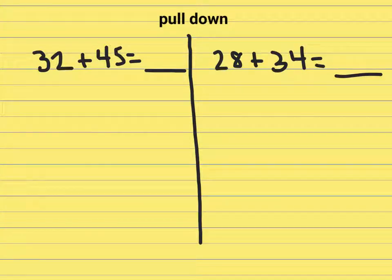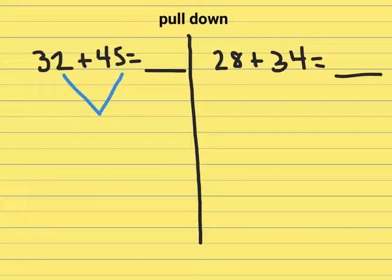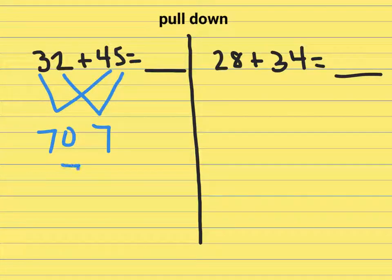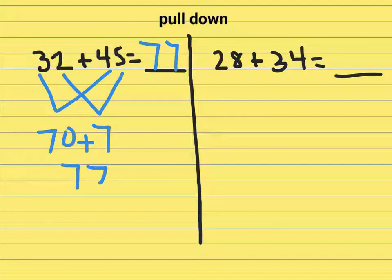This final strategy is for students who are really advanced. We call it the pull down strategy. They can either start in the ones or tens place, it doesn't matter. But the idea is that they would look at the 2 in the ones place and the 5 in the ones place and they'd say that's 7. They'd look at the 30 and the 40 and they say that's 70. And together, that's 77. And they'd be done with the problem.